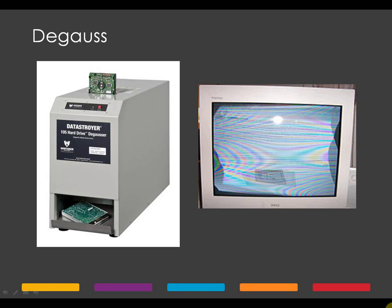Remember, degaussing only works on magnetic media such as hard drives, floppy disks, and magnetic tape — not optical media like DVDs and CDs. Degaussing will, in all likelihood, render a drive or disk unusable, so don't use this method if the goal is to keep a working drive. It should not affect the usability of magnetic tape.